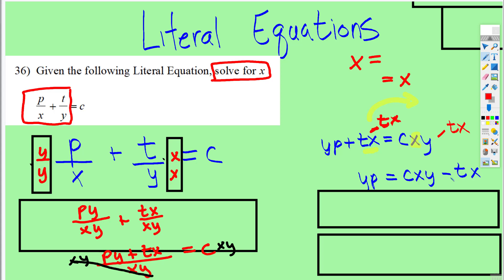And notice we still have a little bit to do. But what does this expression and this expression, what do they share? They share an x. So we can do the reverse distributive and factor out that x. cxy divided by x, the x would cancel, leaving cy.